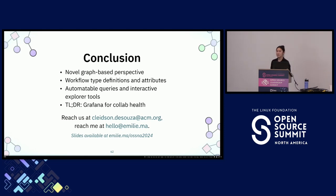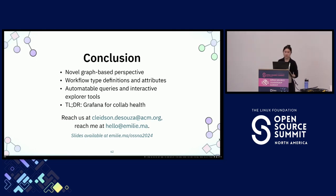An audience member asks where they can find the open source code for the project. Emily says you can find it at github.com/ubcdlab/prissue-topology-project, and offers to write down the exact link.